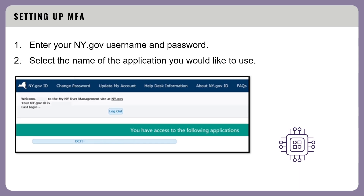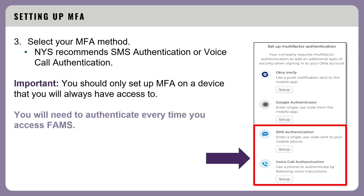To set up MFA, enter your ny.gov username and password, then select the name of the application you would like to use. Select your MFA method. New York State recommends SMS authentication or voice call authentication. It is important to remember that you should only set up MFA on a device that you will always have access to. You will need to authenticate every time you access FAMS.